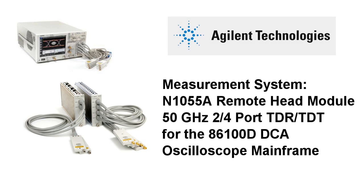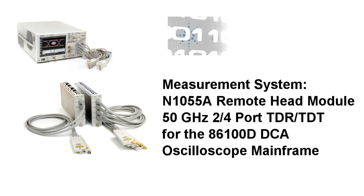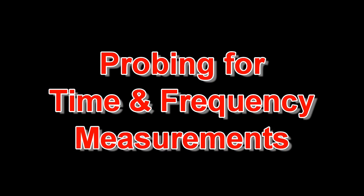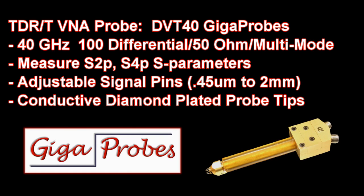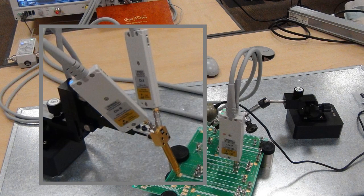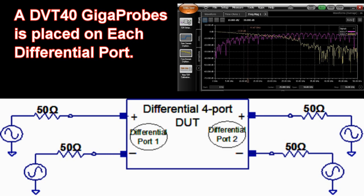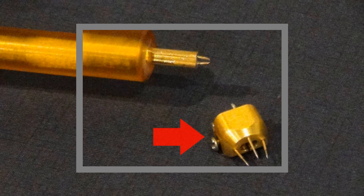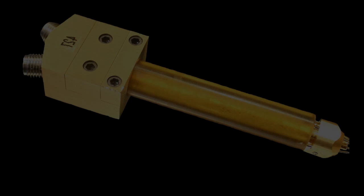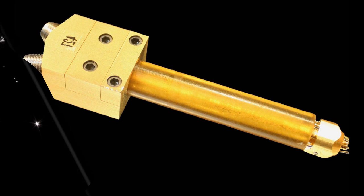We will be using the Keysight N1055A 50 GHz module to make the 4-port S-parameter and differential measurements for this transmission line. The DVT-40 40 GHz Gigaprobe will be connected to the N1055A modules and is used to acquire the differential TDR waveforms. To acquire both odd and even waveform measurements to extract full differential 4-port S-parameters, we attach the inline ground collar to the end of the probe to form a ground-signal-signal configuration necessary to create an S4P Touchstone file used to de-embed the channel interconnect path.